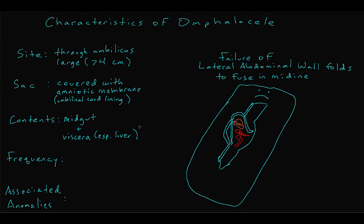Recall that the abdominal wall folding and fusion process occurs early, around weeks three and four, during embryologic development. As a result, other organ systems tend to have associated abnormalities as well, especially chromosomal and cardiac abnormalities.